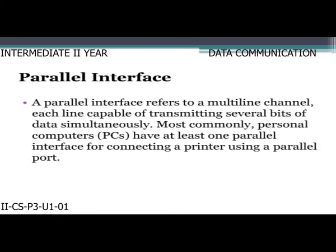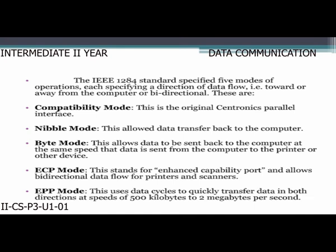Types of interface: there are two types — parallel and serial. A parallel interface refers to a multi-line channel where each line is capable of transmitting several bits of data simultaneously. Most commonly, personal computers have at least one parallel interface for connecting a printer using a parallel port. The IEEE 1284 standard specifies five modes of operation, each specifying a direction of data flow toward, away from, or bi-directional to the computer.